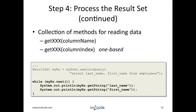When we're inside the loop, we need to retrieve the data. We can make use of various getter methods, retrieving data by either the column name or the column index. In this example, we print out the last name and first name of each row: while(myRS.next()), then System.out.println(myRS.getString("last_name")), and System.out.println(myRS.getString("first_name")). Note that last_name and first_name are columns in the table.